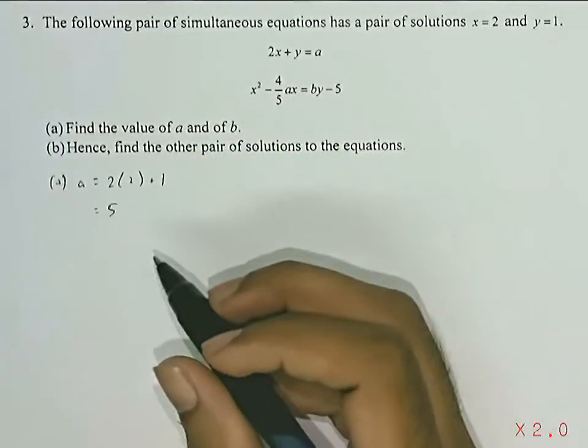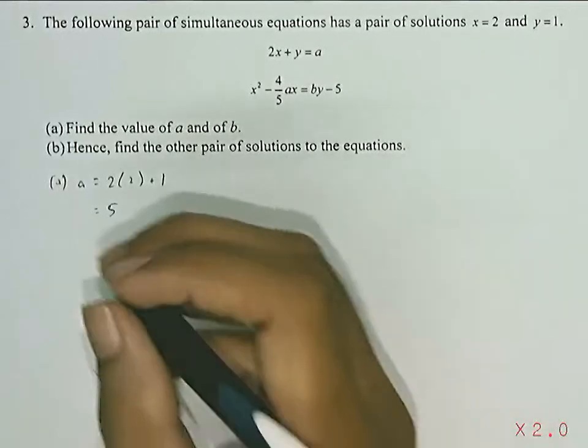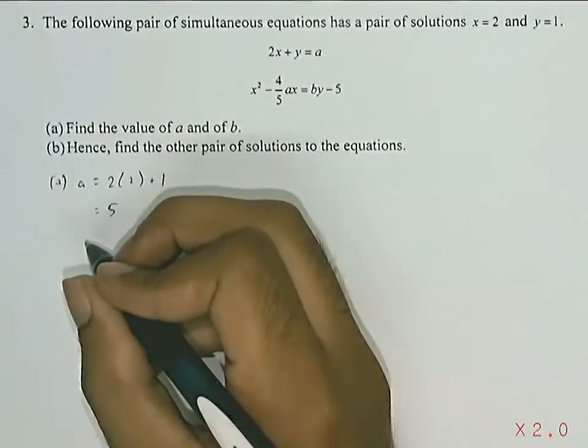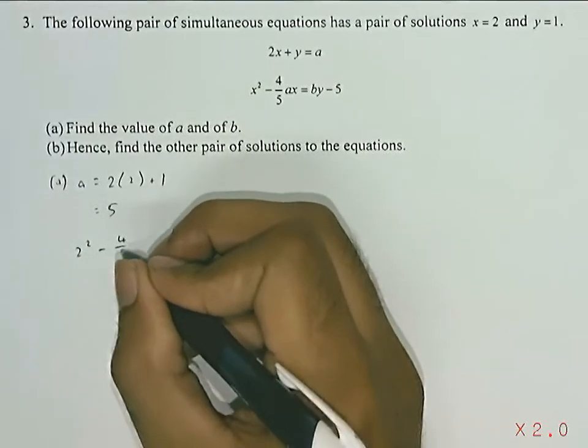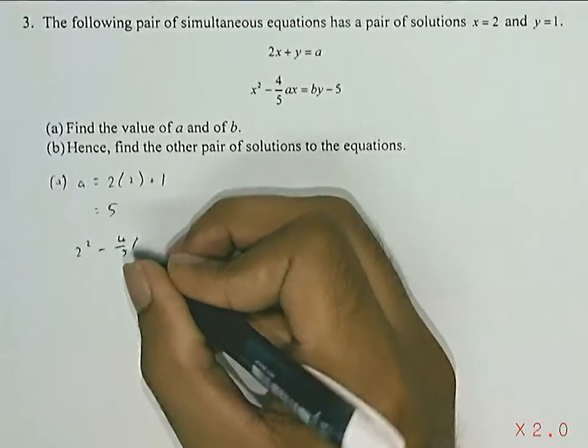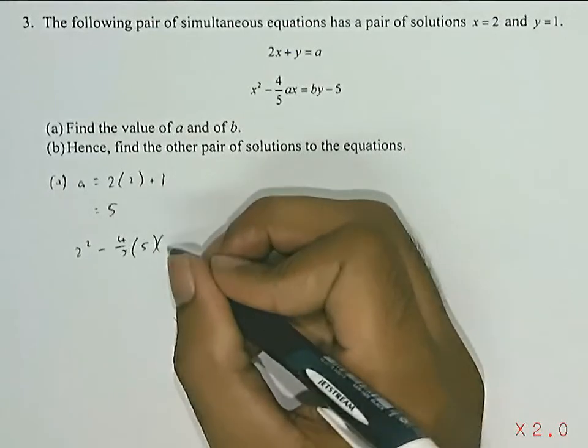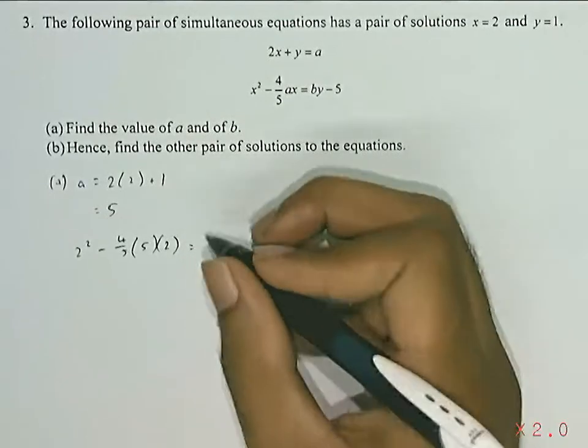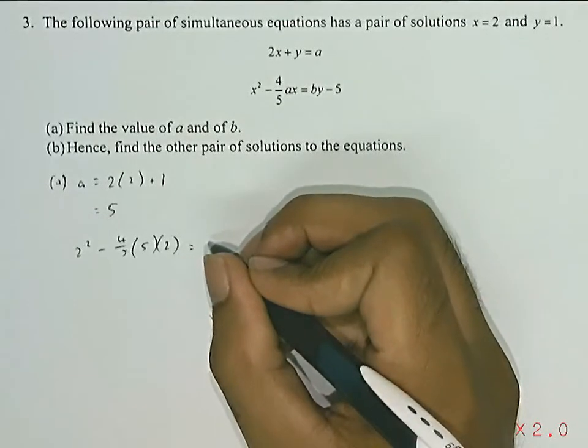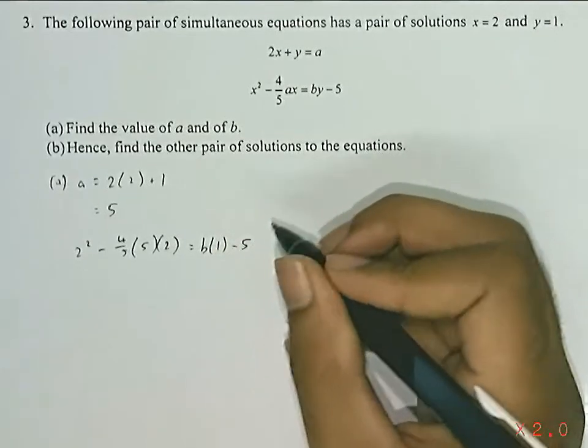Next, subbing x, y, and a into the next equation, we will get 2 squared minus 4 fifth times 5 times 2 is equal to b times 1 minus 5.